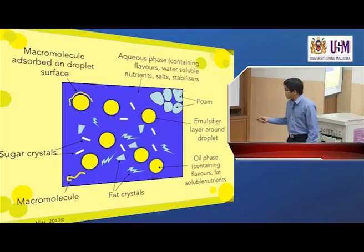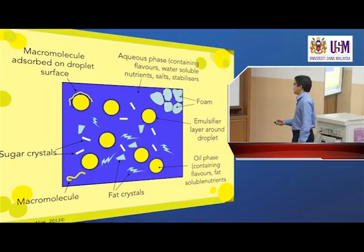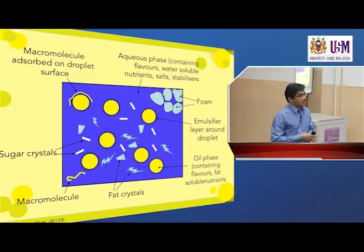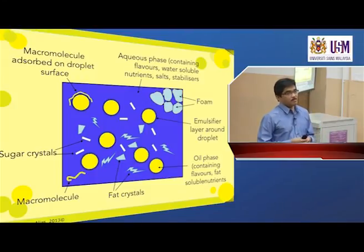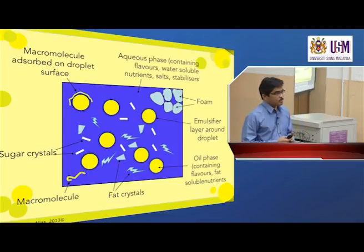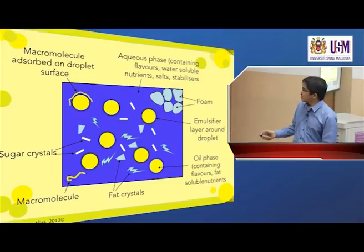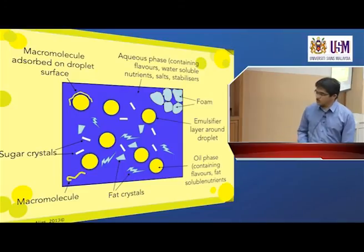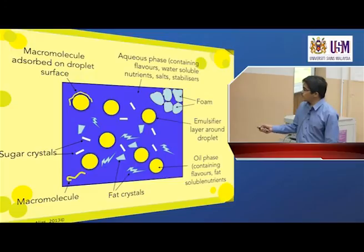In the oil phase, whatever is solubilized there would be available — some flavors are soluble in fat or oil, and any fat-soluble nutrients. During the process of making ice cream, we reduce the temperature to a freezing temperature. Then during the freezing process, water will start to form ice crystal, whereas the fat would also form fat crystal. So we have solid crystals formed in the oil phase. This is basically a complex dispersed system.